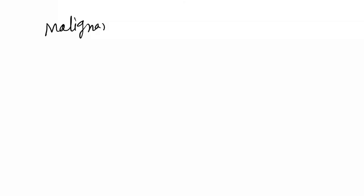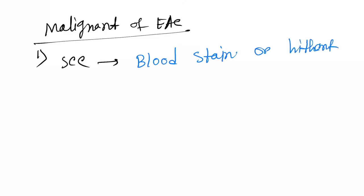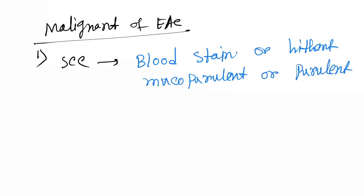Moving to malignant tumors of the external auditory canal, the first is squamous cell carcinoma. The clinical features include blood-stained, mucoid, and virulent discharge.